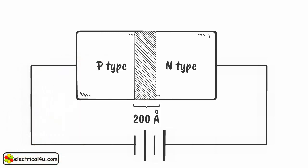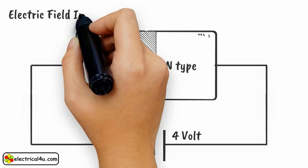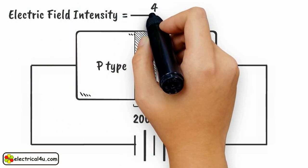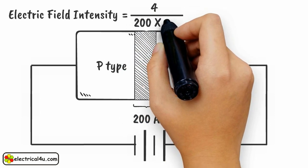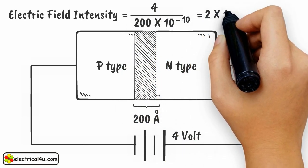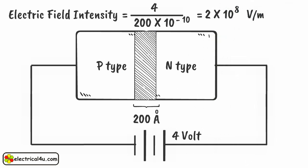If a reverse bias voltage of just 4 volt is applied to the diode, the electric field intensity or voltage gradient in the depletion region will be 4 by 200 into 10 to the power minus 10 equals 2 into 10 to the power 8 V by M. That's very high intensity.